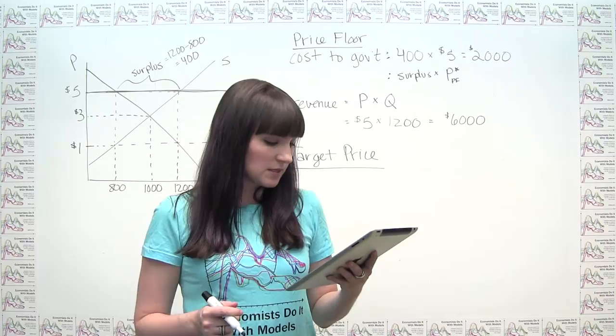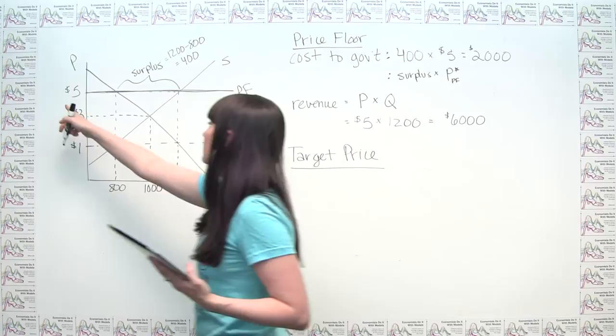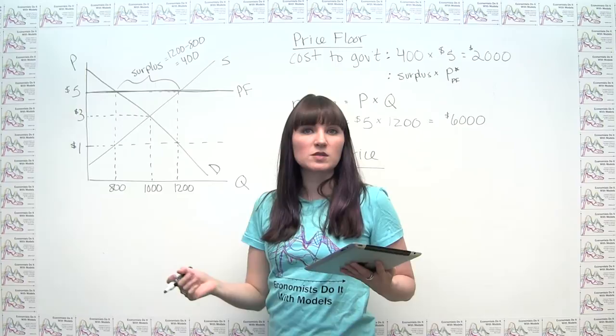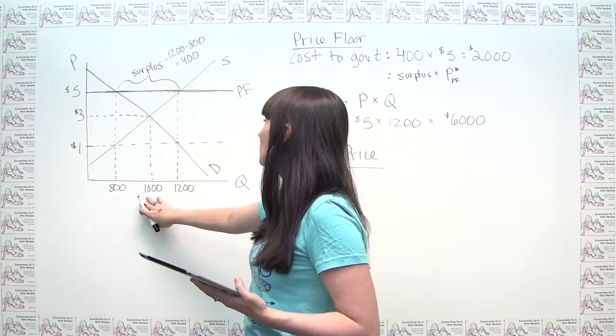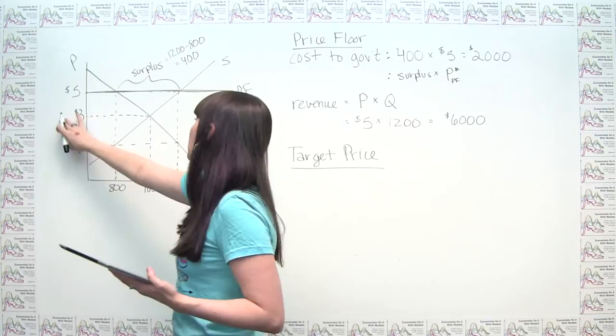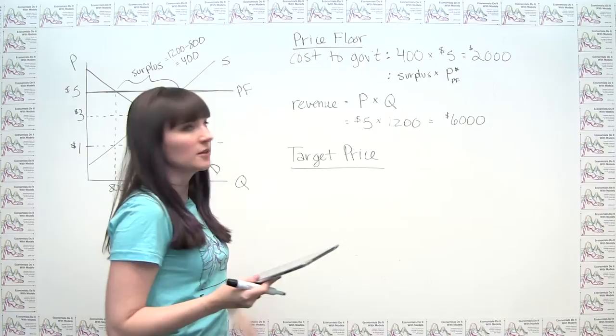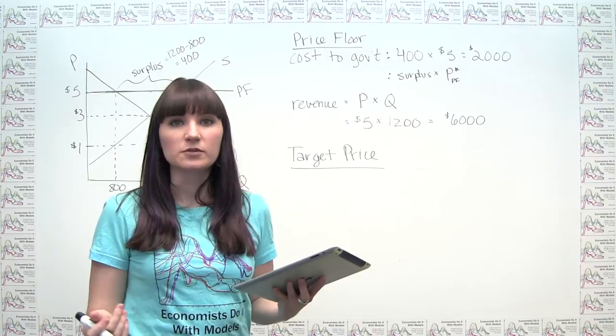Part B says: suppose the government sets a target price of $5 per bushel for any quantity supplied up to 1,000 bushels. This seems similar in that producers ultimately get $5, but now we're capping it at 1,000 bushels — the amount the regular market would supply on its own, just at a price of $3 rather than $5. I've relabeled things to distinguish our price floor situation from our target price situation so we can compare the two scenarios.